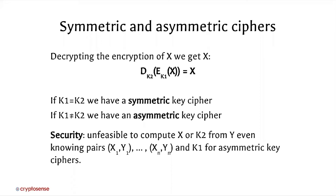If key one and key two are identical, this is called a symmetric key cipher — the decryption key is identical to the encryption key. If key one is not the same as key two, then we have an asymmetric key cipher. For this to be secure, not just that the decryption key differs from the encryption key, but the decryption key must be impossible to derive from the encryption key in an asymmetric key system.